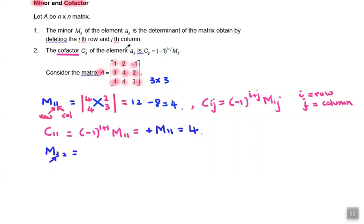So we have 1, 3, negative 1, 2. Then its determinant is equal to 1 times 2, that is 2, minus 3 times negative 1, that is negative 3. That is equal to 5.